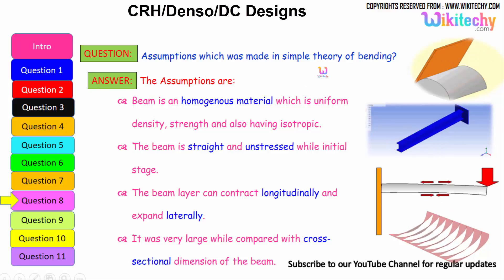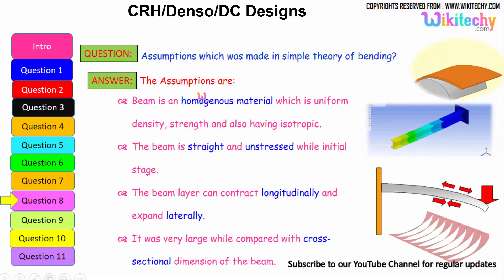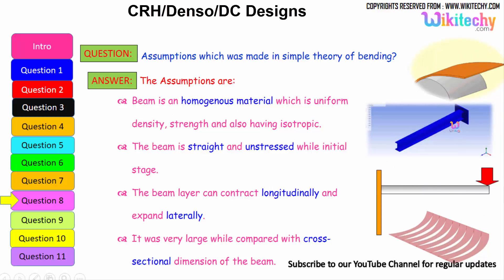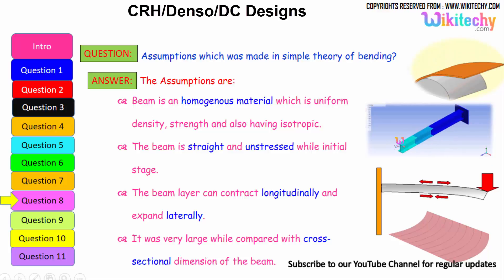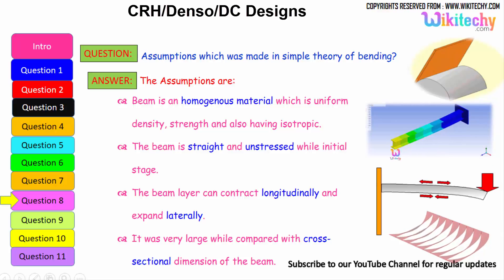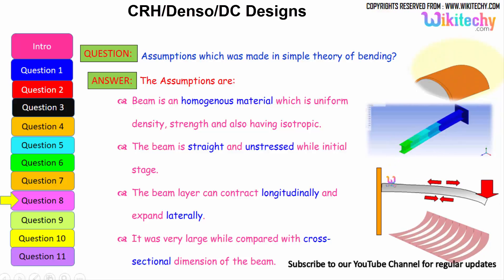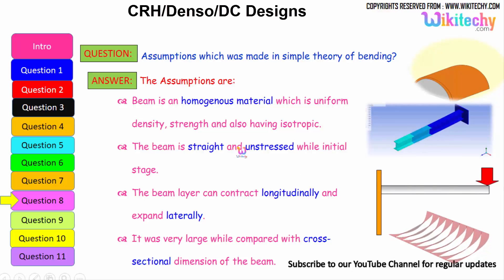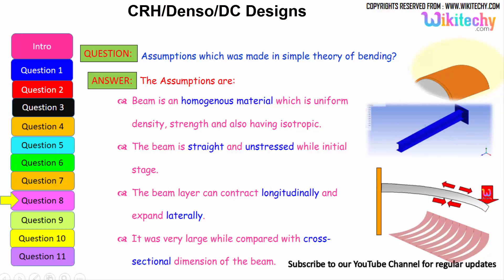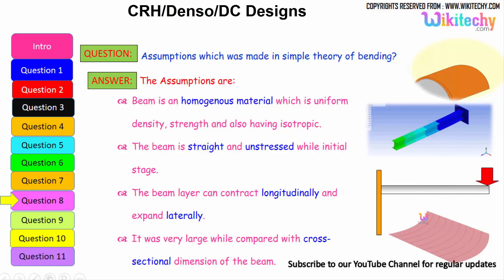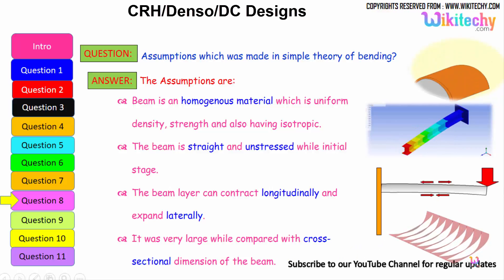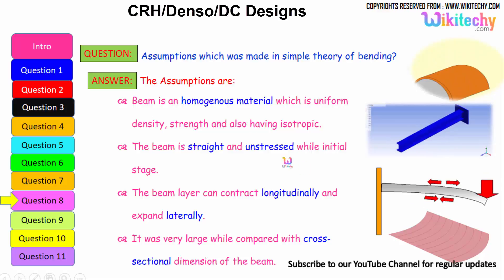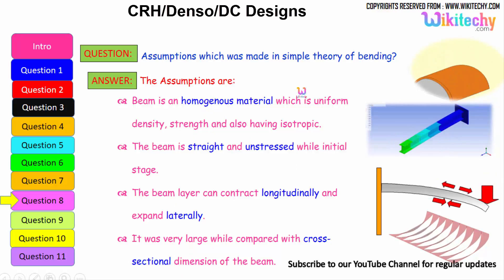Assumptions made in the simple theory of bending: the beam is made of homogeneous material with uniform density, strength, and is isotropic; the beam is straight and unstressed in its initial stage; the beam can contract longitudinally and expand laterally; and the beam length is very large compared with its cross-sectional dimensions.